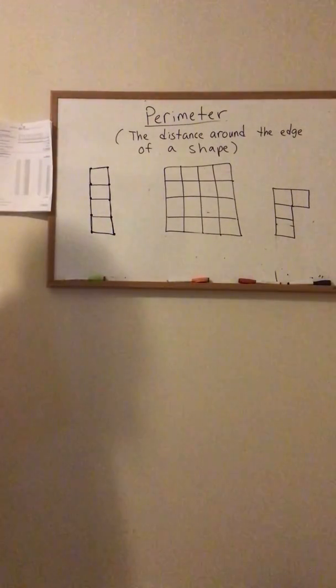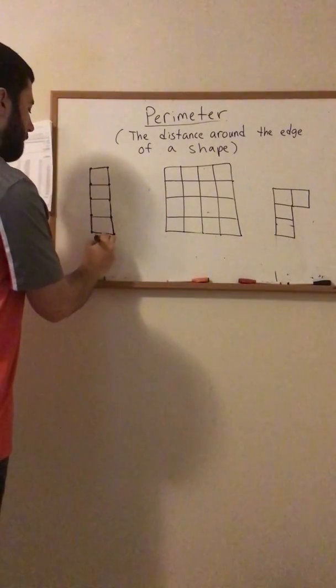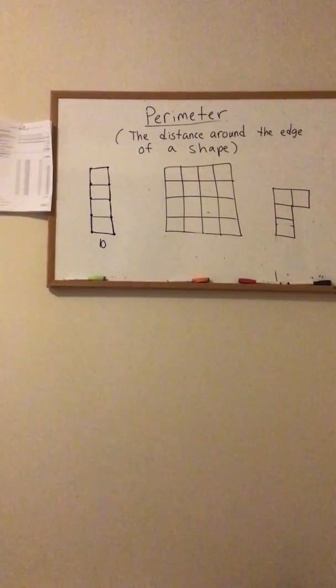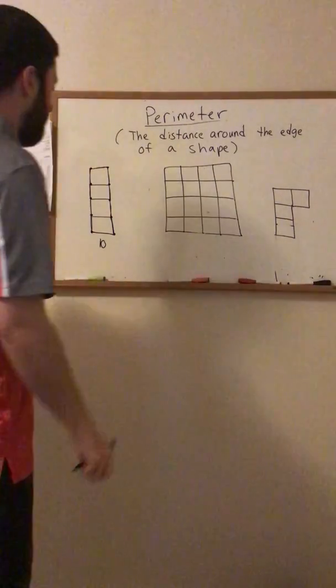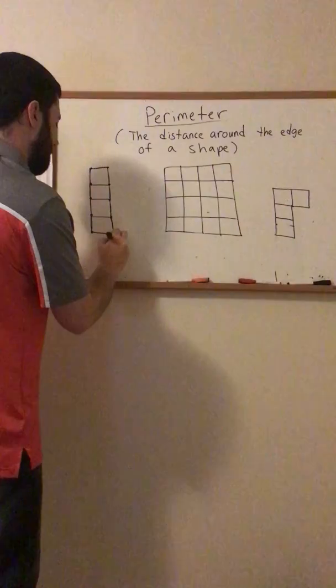So my perimeter of this shape would be 10. Now I don't just say 10. When we go around we call these units. So it's going to be 10 units.